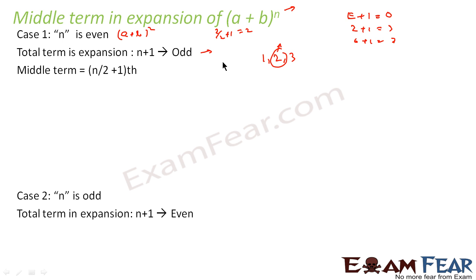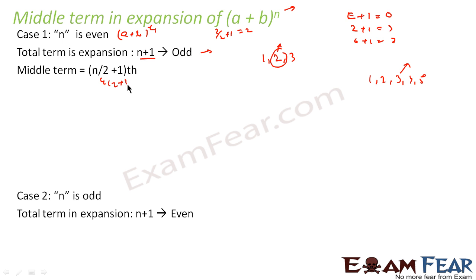Similarly, for (a + b) to the power 4, you get 5 terms (n + 1 terms). The middle term is the 3rd term. And 3 = n/2 + 1 = 4/2 + 1 = 2 + 1 = 3. So this is the middle term.